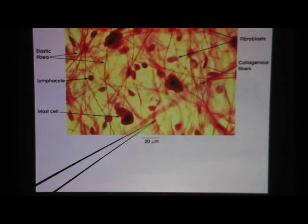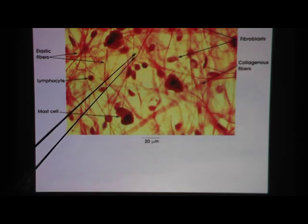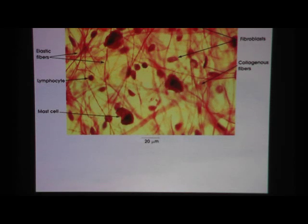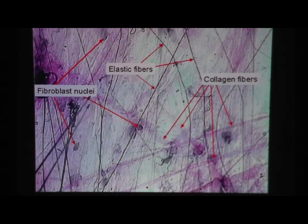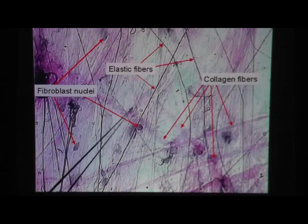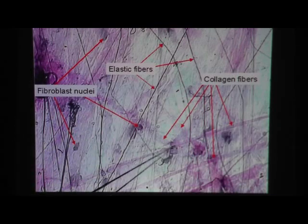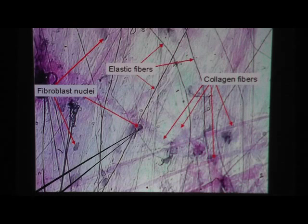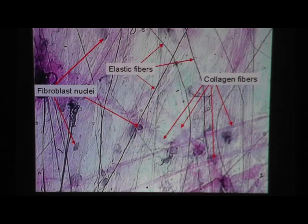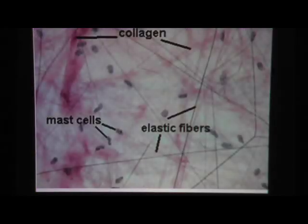Here you can clearly see the collagen fiber — the thick one. The skinny one is the elastic fiber, and this whole tissue is areolar connective tissue. Here's another look with a different dye, more bluish in color, but you can faintly see the collagen fibers. The dark ones are elastic fibers, labeled E to C. And the nuclei visible here belong to fibroblasts.